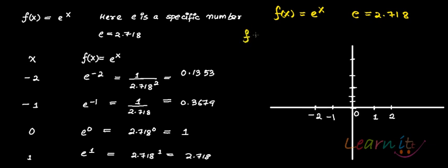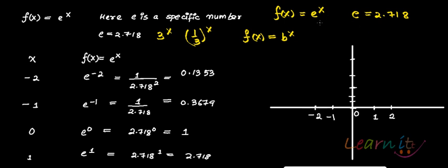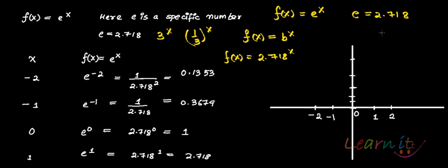We've already seen f(x) = b^x, with a specific example where f(x) = 3^x and g(x) = (1/3)^x. Now, to graph f(x) = 2.718^x, since 2.718 is greater than 1, we know from the properties of exponential functions that this is going to be an increasing function.